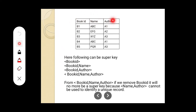Similarly, can we consider book_id and author as a super key? B1, A1 — is it repeating? No, it is not repeating. B4, A1 is there, but not B1, A1 — B1, A1 is only a single record. So book_id and author can be a super key. Next, book_id, name, author — these three attributes can be considered as a super key. Is any one of these records repeating? No — B1, A, B, C, A1 is not repeating. So book_id, name, author can be a super key. So the super keys are: book_id; book_id and name; book_id and author; and book_id, name, author.